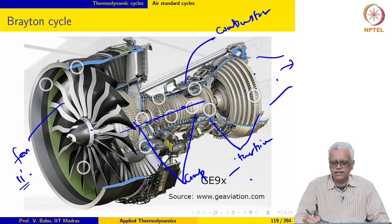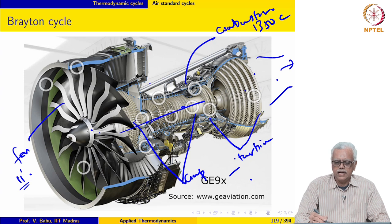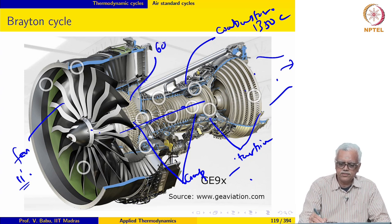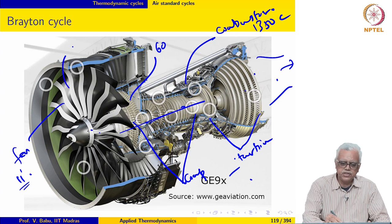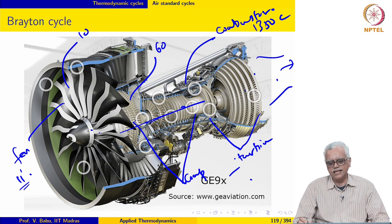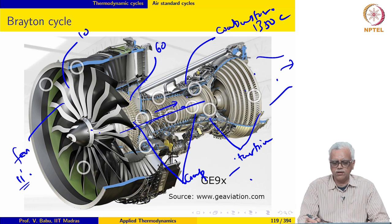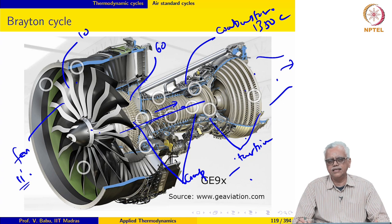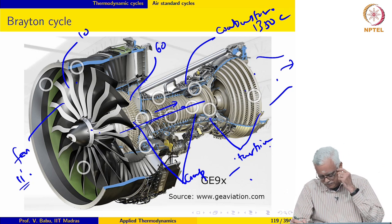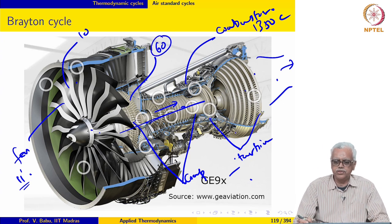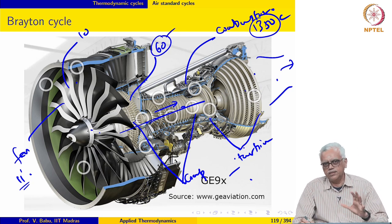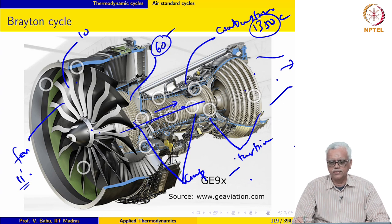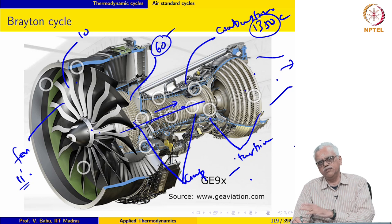This engine has maximum temperatures around 1350 degrees Celsius and an overall pressure ratio of about 60. It is among the most powerful engines, with an extremely high pressure ratio and a bypass ratio of 10. This means that for every kilogram per second of air that goes through the core gas turbine engine, 10 kilograms per second goes through the fan. So it is a high bypass ratio turbofan engine, which is why the fan diameter is so high. We will keep these numbers — pressure ratio 60, maximum temperature 1350 degrees Celsius — in mind when we do the air standard Brayton cycle.